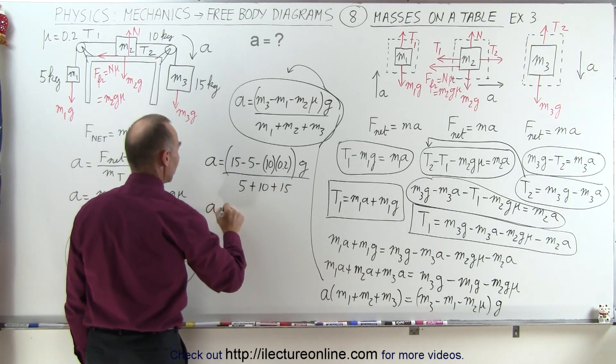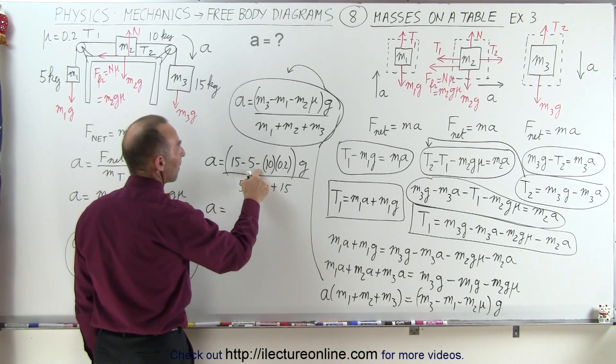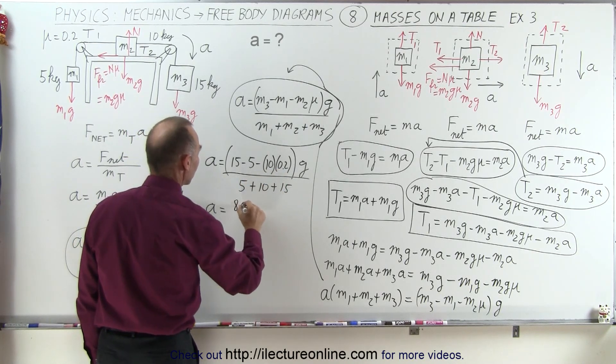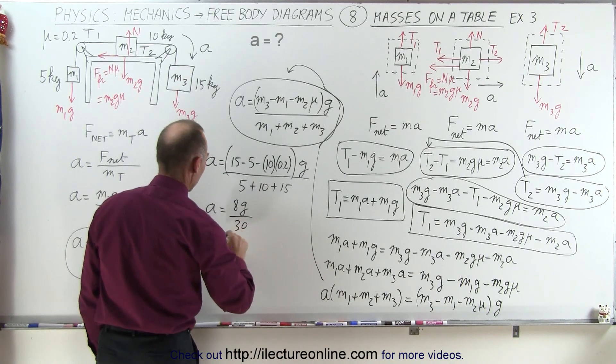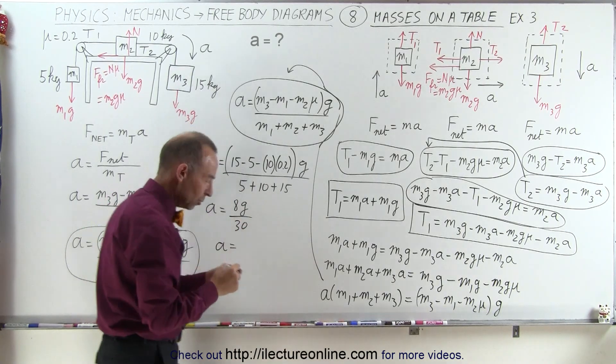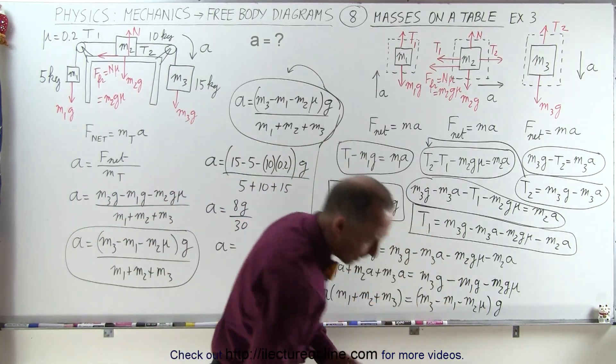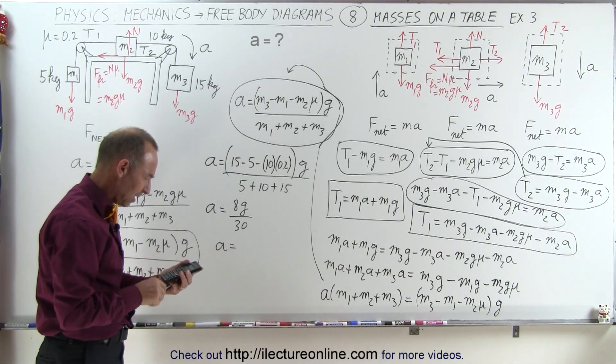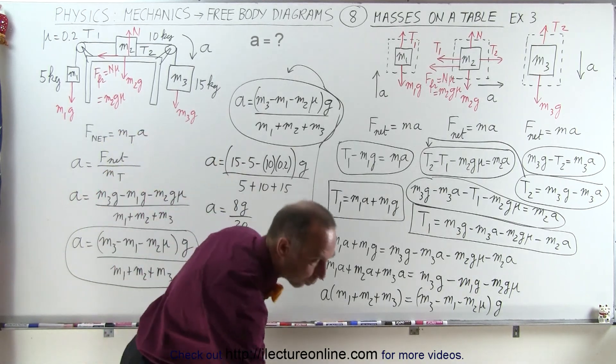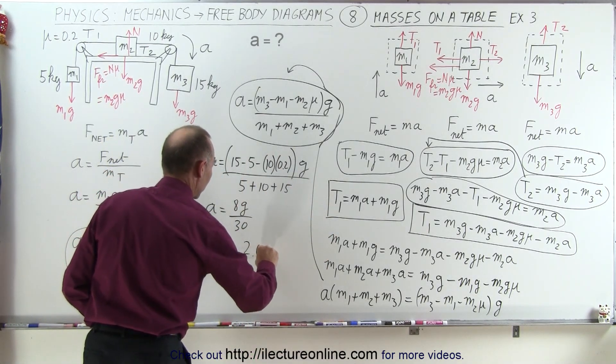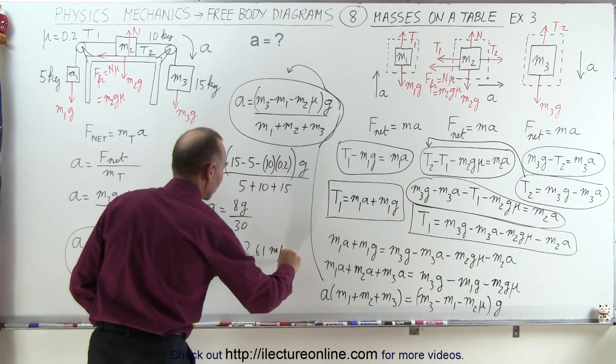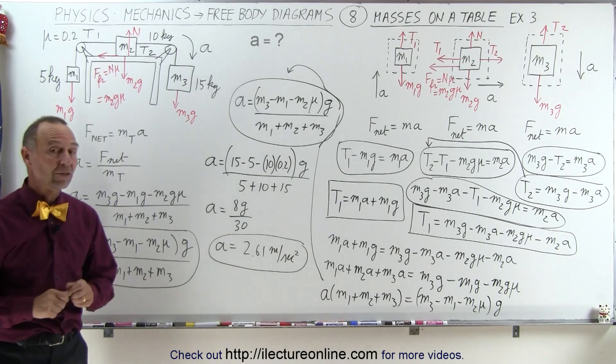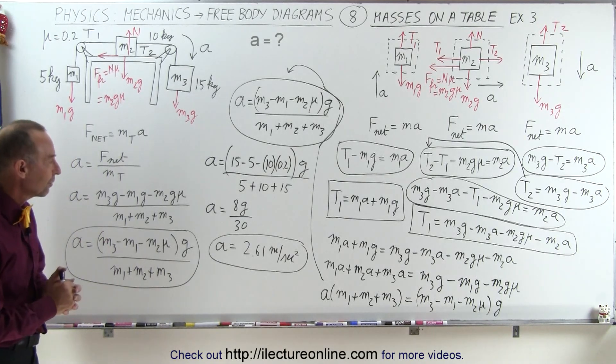And so a is equal to 15 minus 5, which is 10, minus 2, which is 8 times g, so 8g divided by 30. And so a is equal to 8 divided by 30 times 9.8, and we get 2.61 meters per second squared. Now that we have some friction on block 2, the acceleration is a little bit less than it was in the previous video.